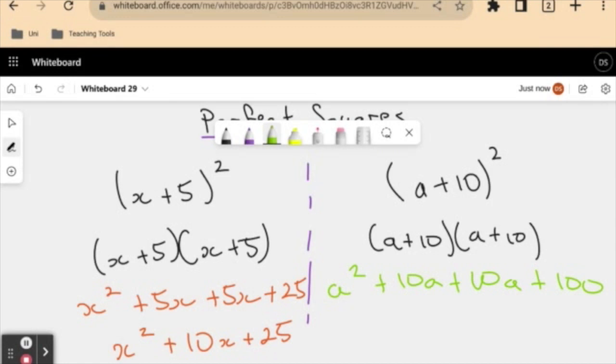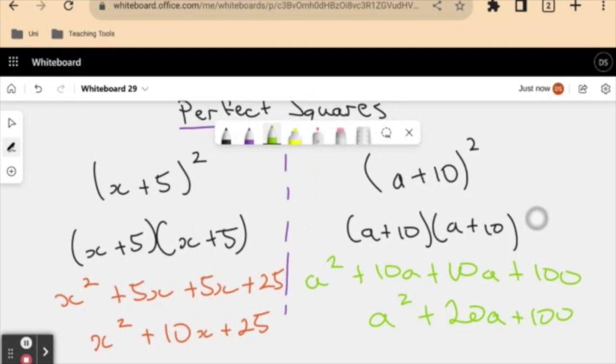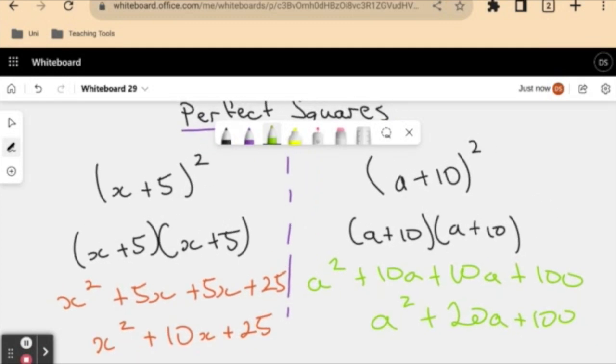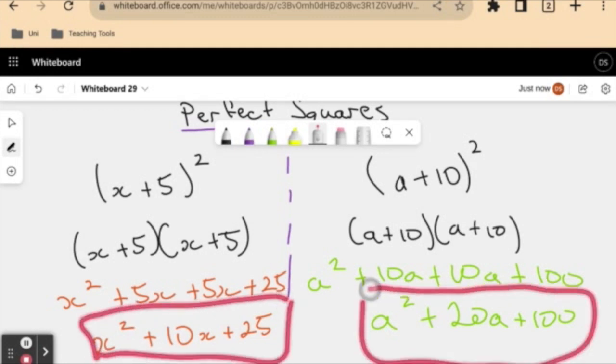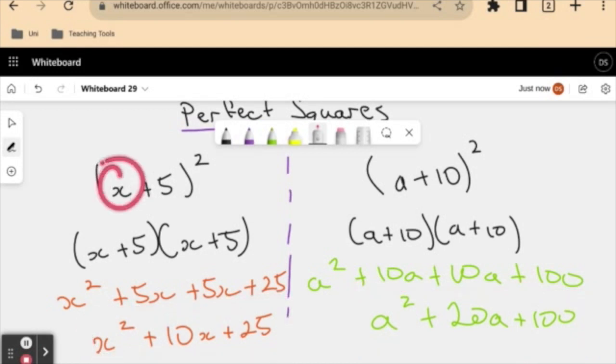Now I can simplify this again because I have two like terms and I'll end up with a squared plus 20a plus 100. Cool. What do we notice here? If you've made some observations, that's fantastic. I'm just going to run you through what I see. So I see that with each of my final answers to the expansion, my first term here got squared and my last term here got squared.